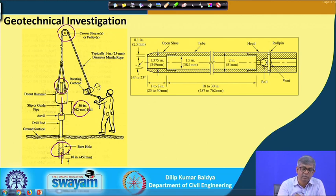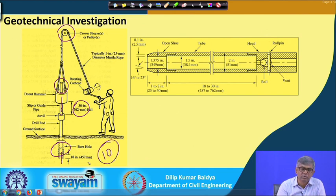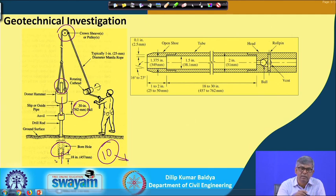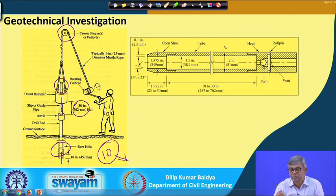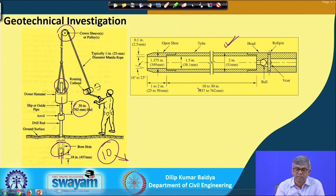For a particular test, suppose 10 blows are required — but this 10 is not an absolute SPT value; you need to apply a correction depending upon the field condition and the method of application of load. A sketch of the sampler is also shown with different dimensions at different places, as I have shown earlier — this is the SPT sampler.